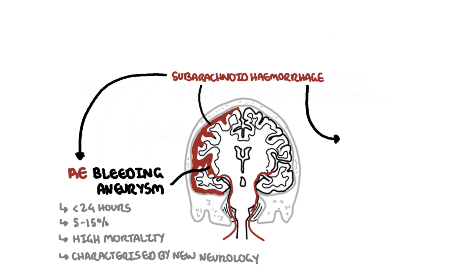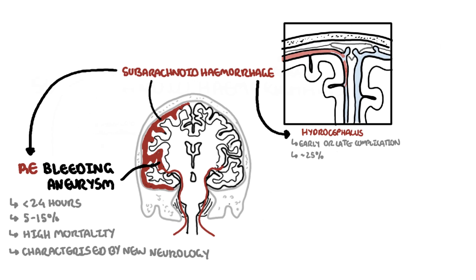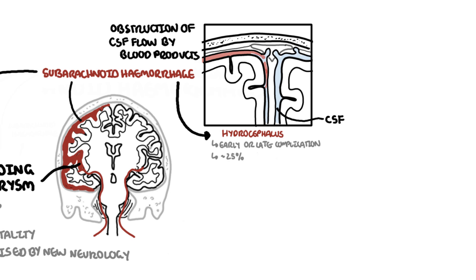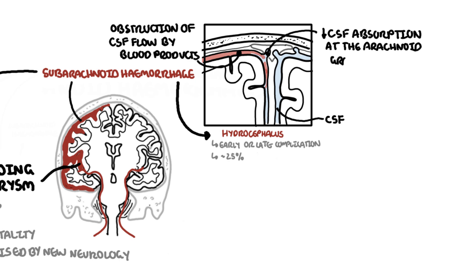Subarachnoid hemorrhage can lead to hydrocephalus, which can be an early or late complication, occurring in about a quarter of patients. What happens is that you have an obstruction of the cerebrospinal fluid flow because of the blood products in the subarachnoid space. As a result, there is reduced cerebrospinal fluid absorption at the arachnoid granulations, and CSF accumulates, leading to hydrocephalus.